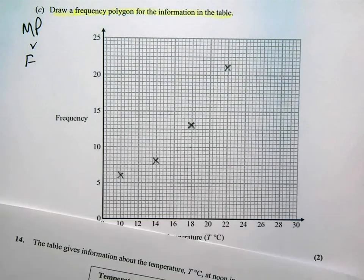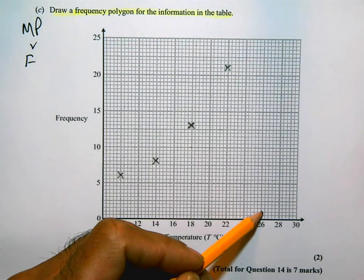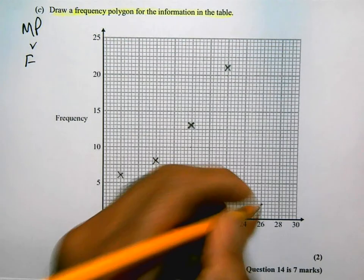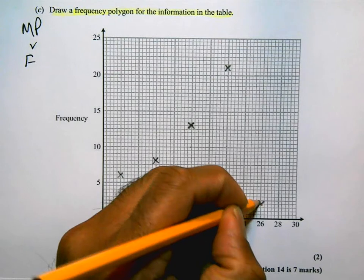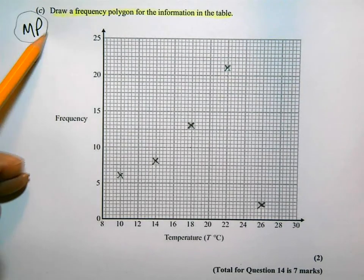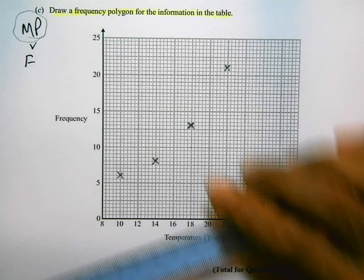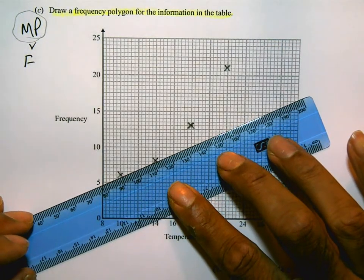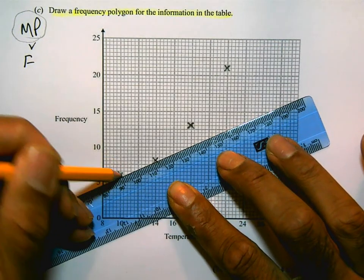It is really important that you get the scale right. You understand that you're using every 2 squares is 1 unit as you're going around. And you plot the points accurately using the midpoints. If you didn't use the midpoints, you will get none of the marks for this. The final thing is, for a frequency polygon, it is straight lines that you use to join the sets of values.